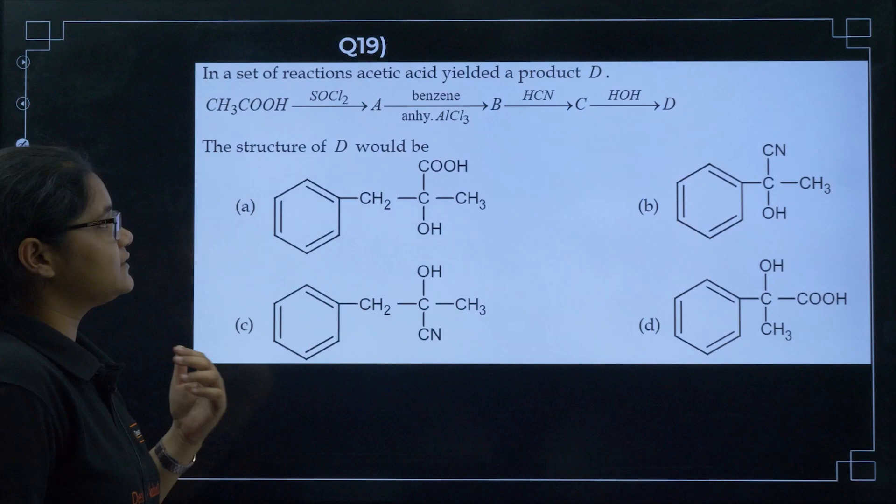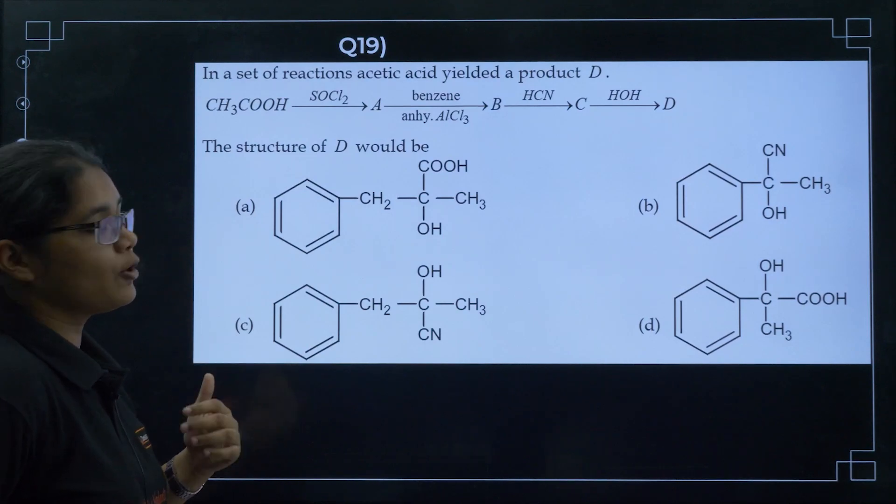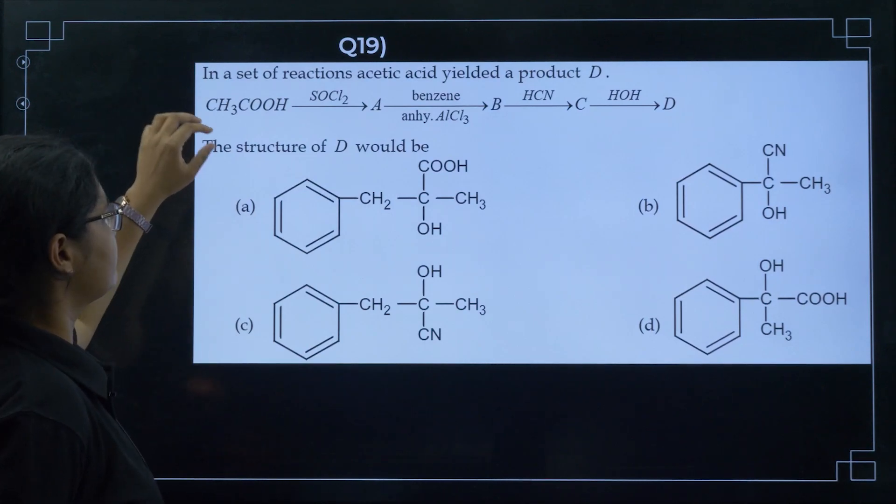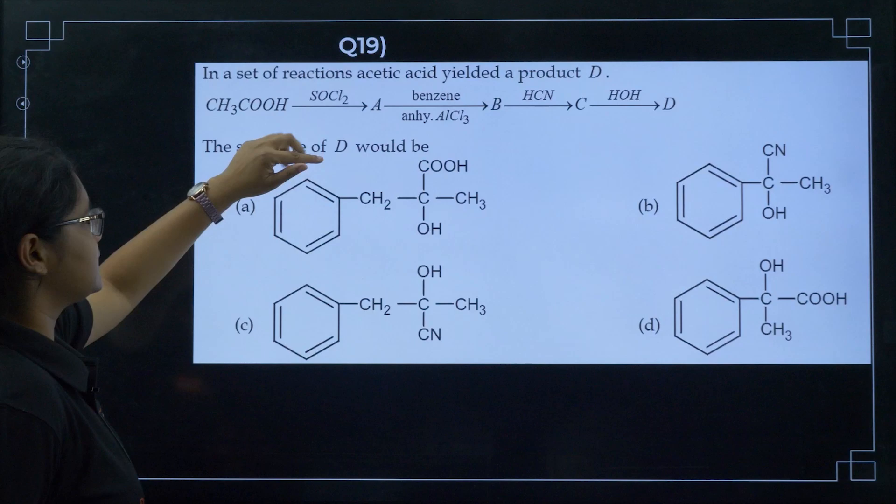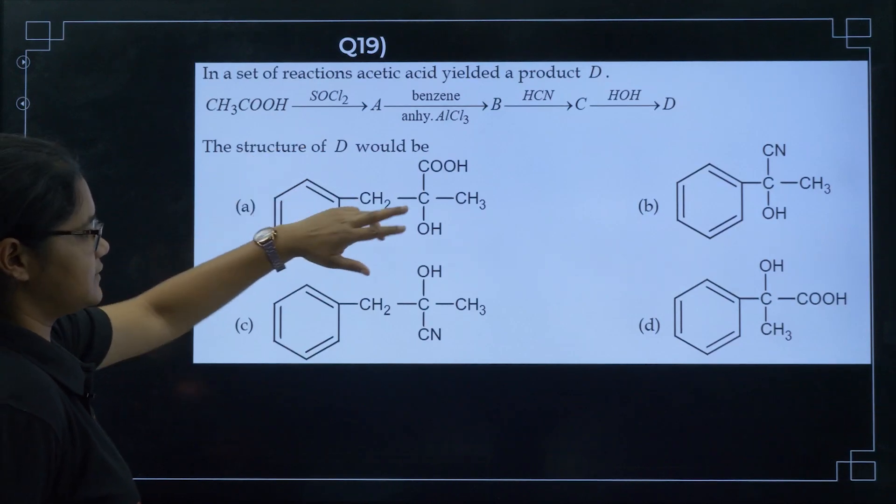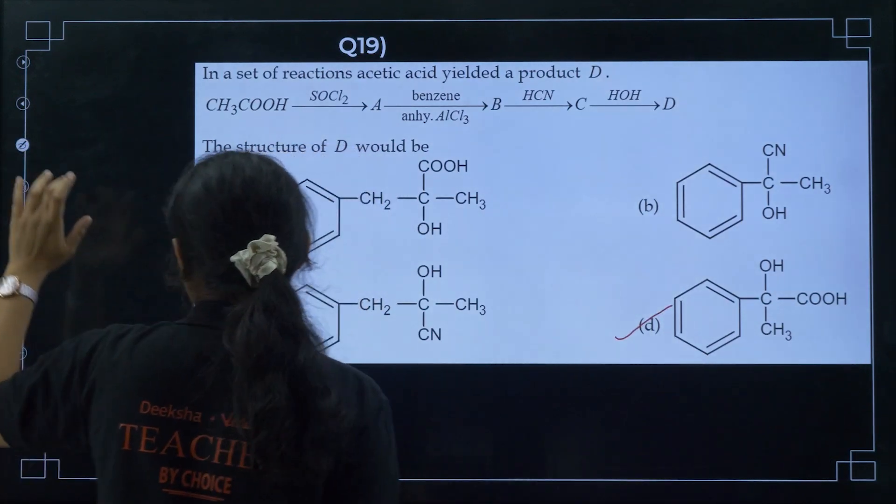Next, in a set of reactions, acetic anhydride yielded a product D. We have acetic acid, so similar reaction. I think the same question got repeated. So this is D only.